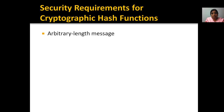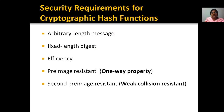One requirement is the arbitrary length message, next one is fixed length digest, and the third one is efficiency, wherein whenever you take two different messages, you are going to get two different hash codes. It is not compulsory that if you are taking the same messages, you may get different hash codes.